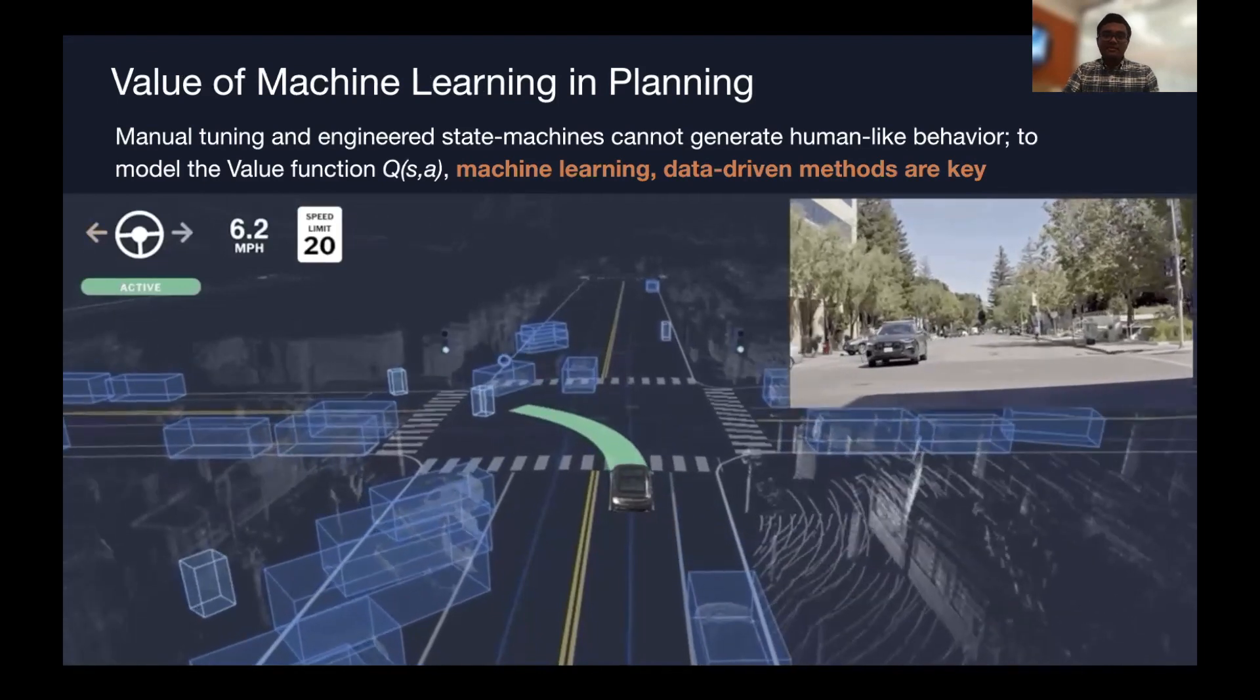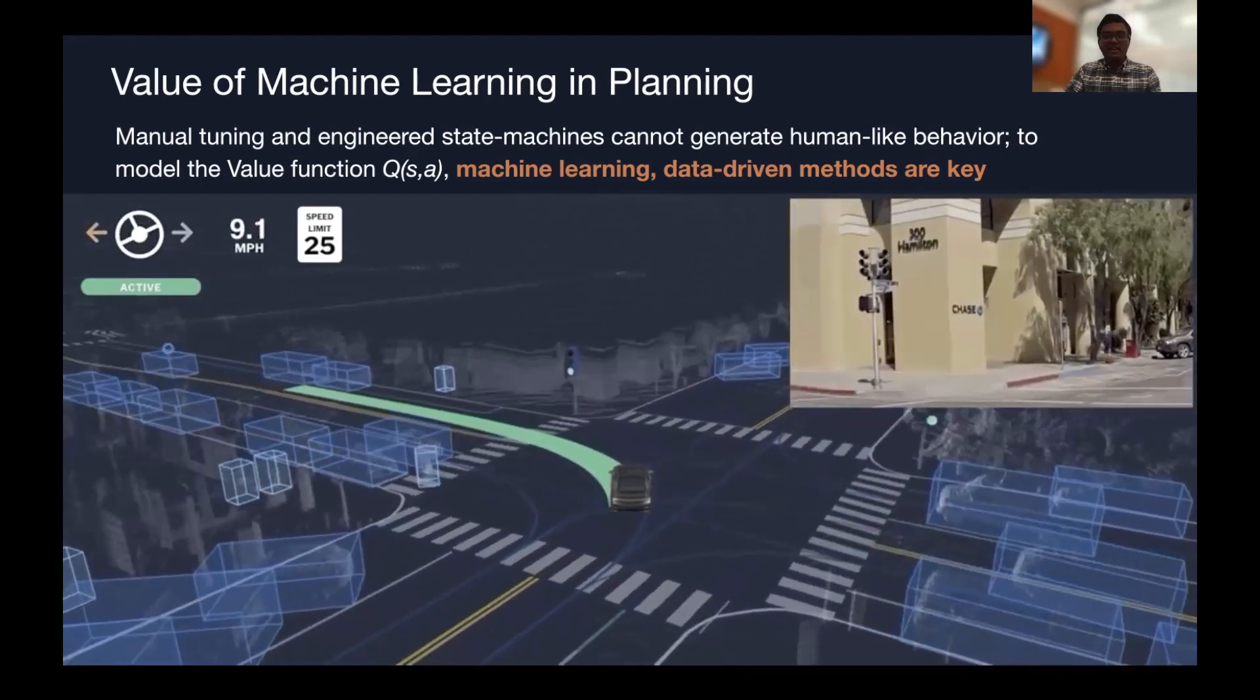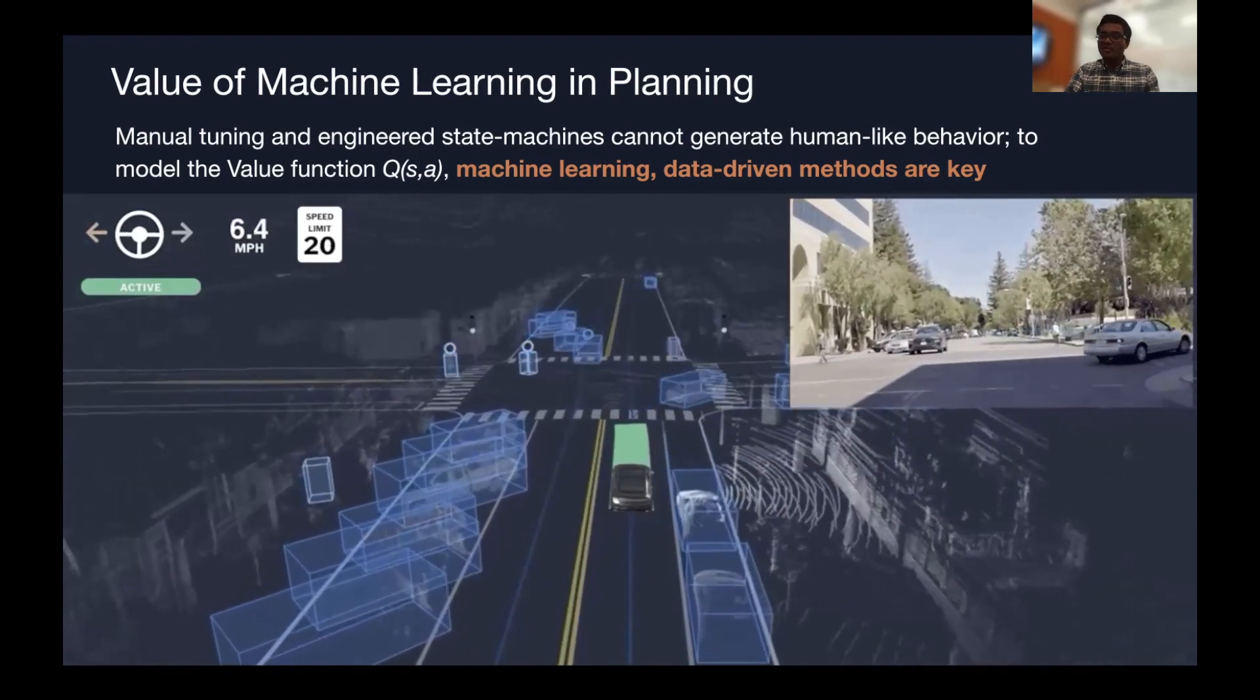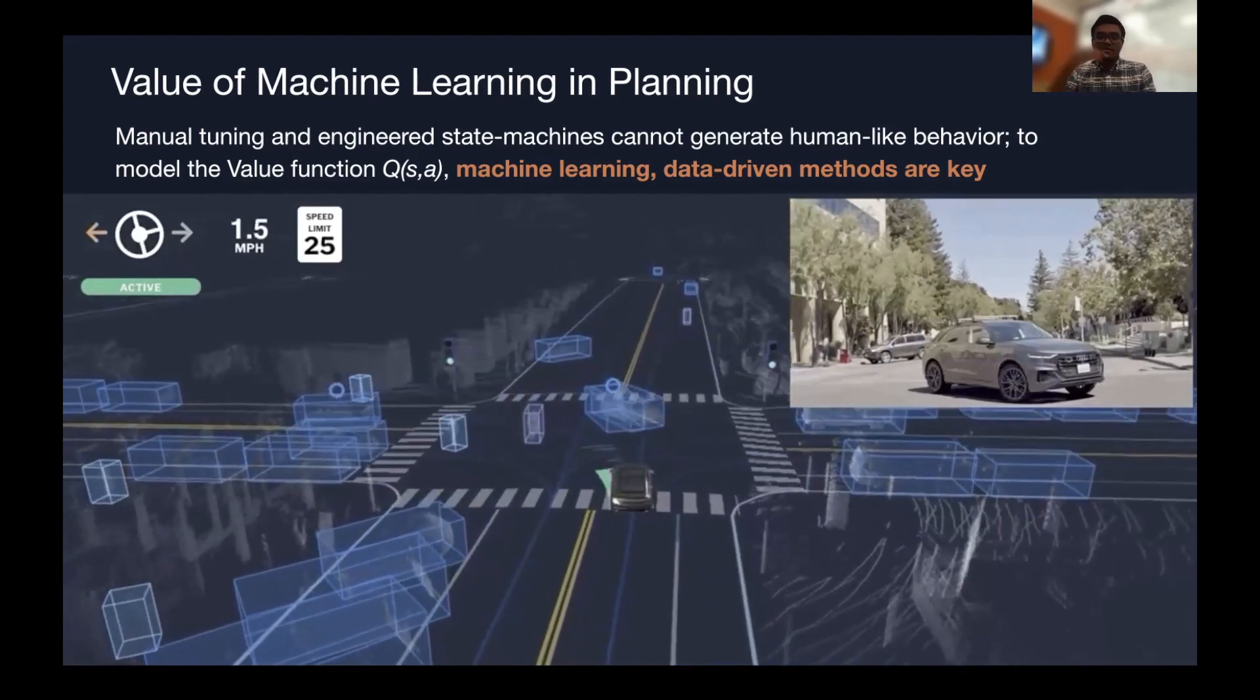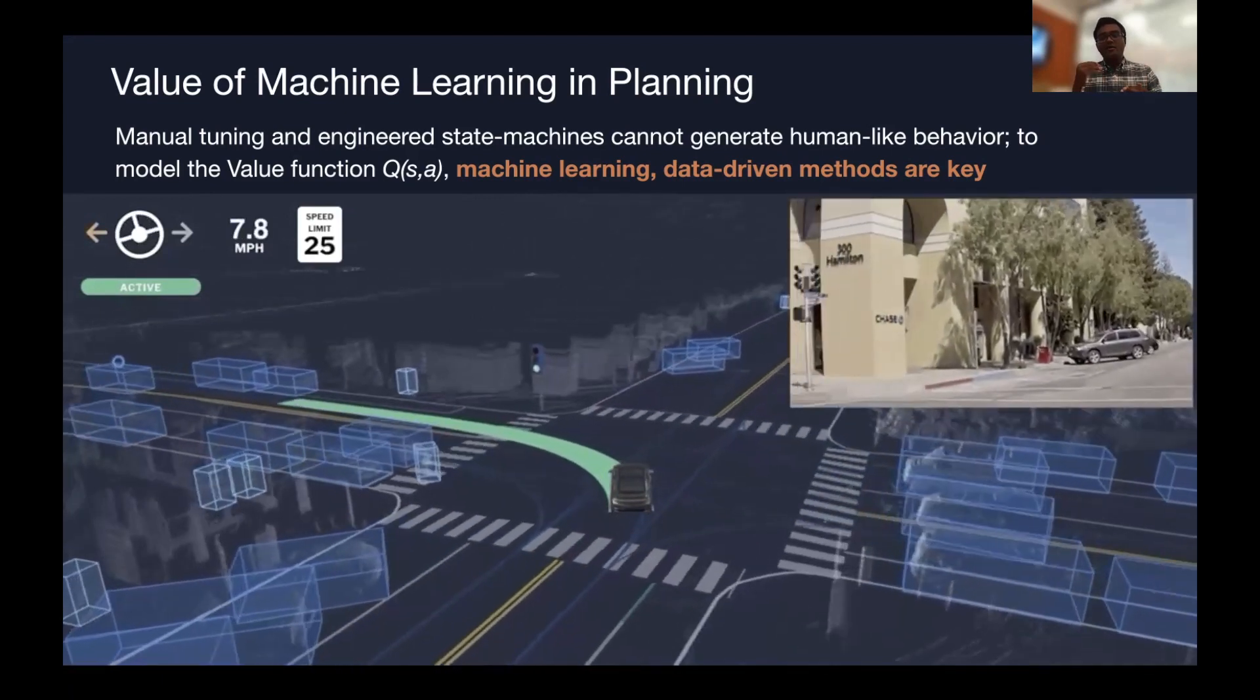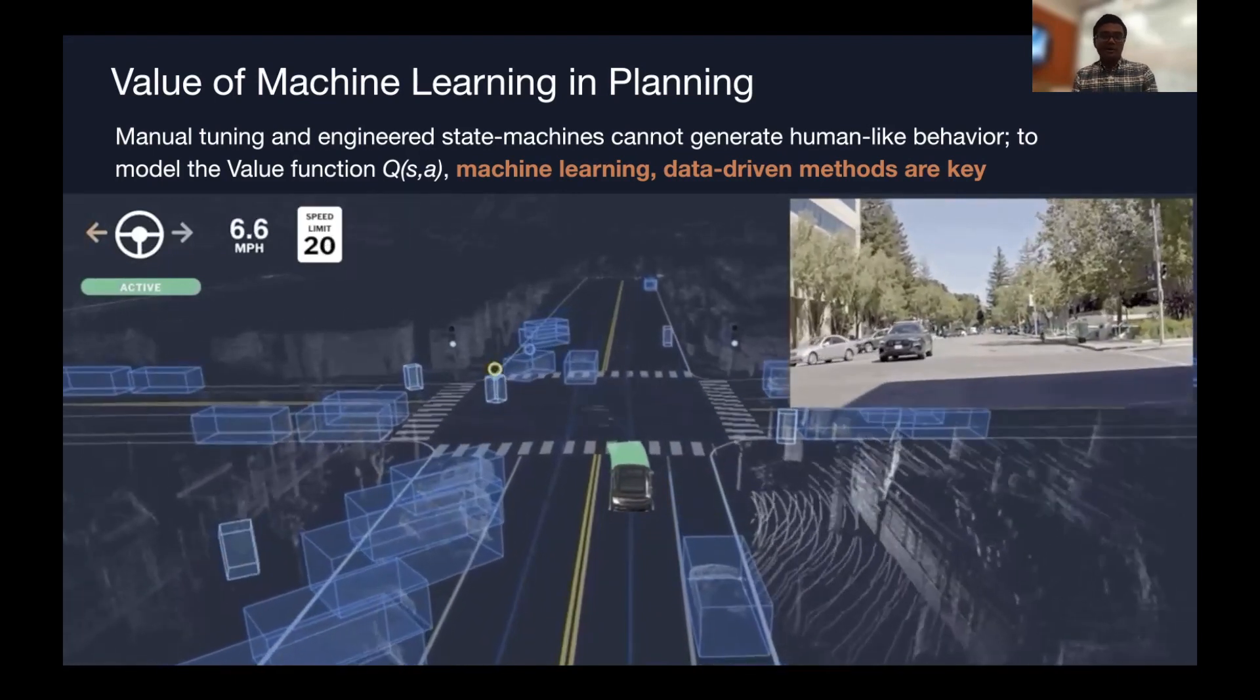And this is really where the value of machine learning comes in for motion planning, is manual tuning of this value function or the forecasts that play into how we construct it makes it very difficult for us to understand how we are doing relative to how the world expects us to evolve. And really using data-driven methods and machine learning lets us think about from everything from the discrete decision space to the continuous application of those decisions, how do our parameters need to be moved to get the behavior we need end-to-end, including how the world evolves around us.